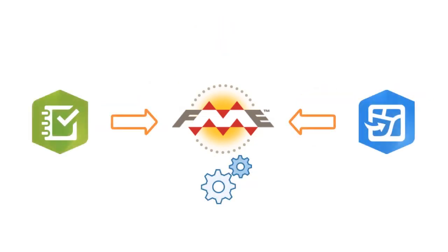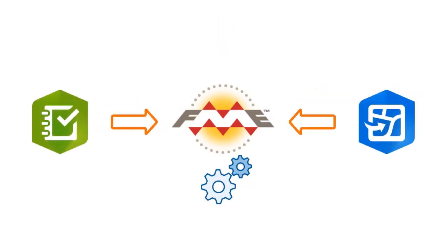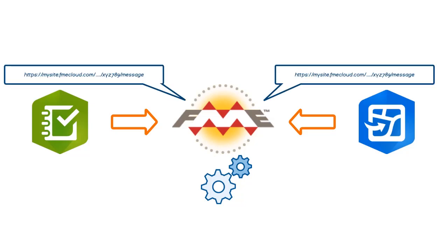What is a webhook? A webhook allows a source web application to send a message to a destination web application — in this case FME server. We tell the source web application to notify us at a callback URL when an event occurs, like a record being added. The webhook is one way only. It's kind of like subscribing to a store's mailing list by providing your email address so that you can receive an email when new stock has arrived.